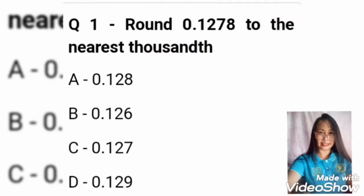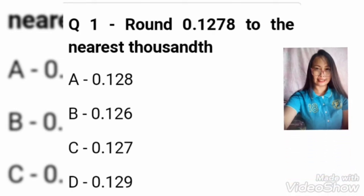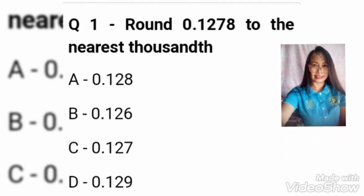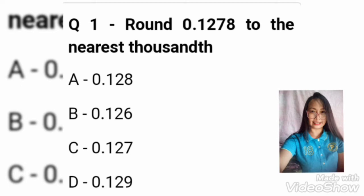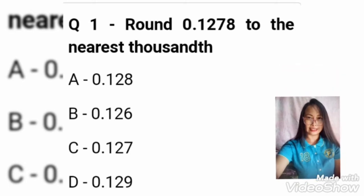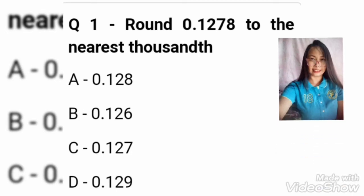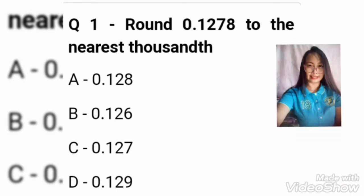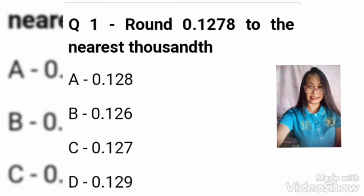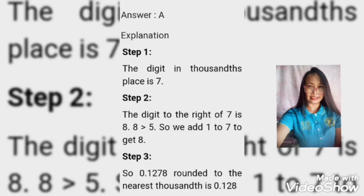For this example, what do you think is the correct answer for this question? So, what is your answer? The correct answer is letter A. The digit in thousandths place is 7. So, the digit to the right of 7 is 8 and 8 is greater than 5. So, we add 1 to 7 to get 8. So, 0.1278 rounded to the nearest thousandths is 0.128.